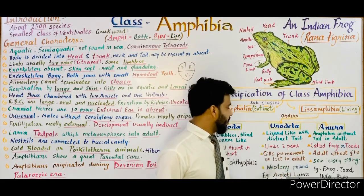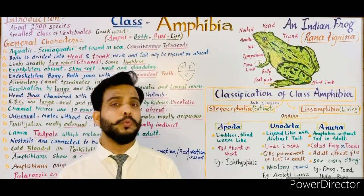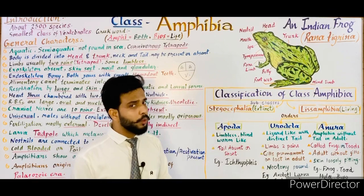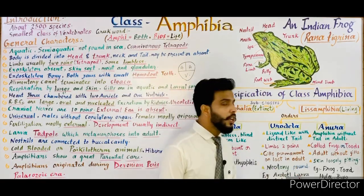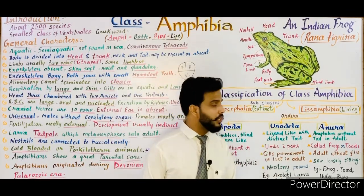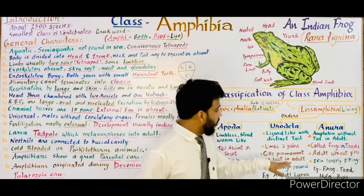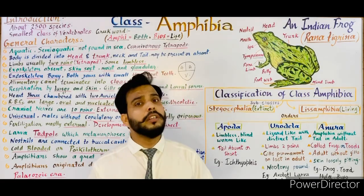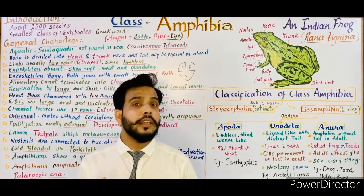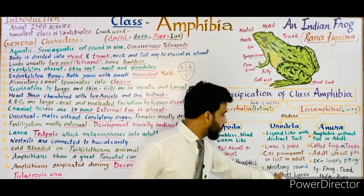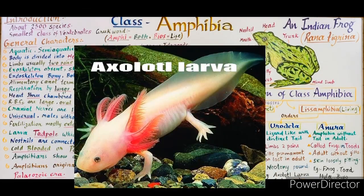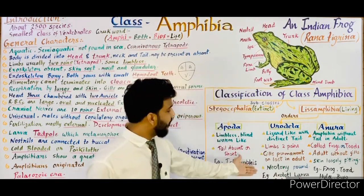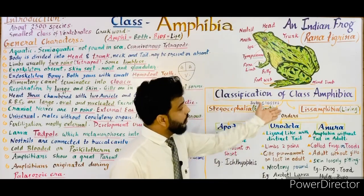In aquatic forms of Urodela, gills may be permanent throughout life; if the animal lives on land, gills may be lost and respiration occurs through lungs or skin. Neoteny is found in Urodela — this is an important term. Neoteny is a condition in which the larva becomes sexually mature without converting into an adult: it enlarges in size and becomes capable of reproduction. The best example of neoteny is the axolotl larva, which is sexually mature but retains a larval body form. Another example of order Urodela is the salamander.